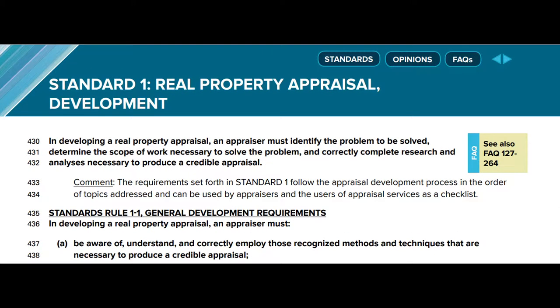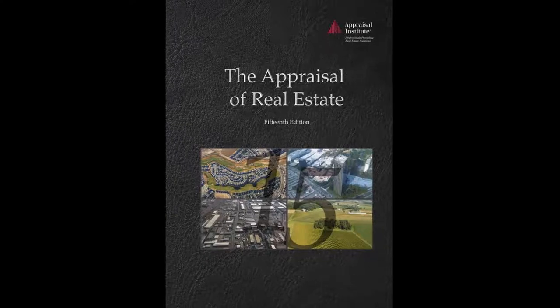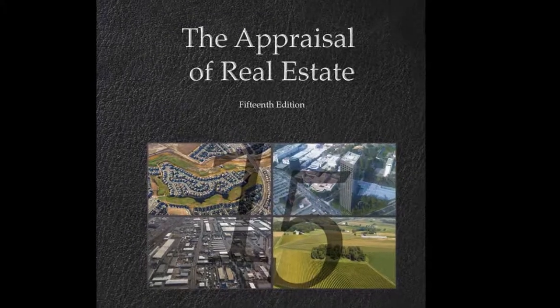USPAP Standard 1 clearly states that an appraiser must be aware of, understand, and correctly employ those recognized methods and techniques that are necessary to produce a credible appraisal. But it does not state what those recognized methods are. All professions have a body of knowledge, and the body of knowledge of the appraisal profession includes the 15th edition of The Appraisal of Real Estate.